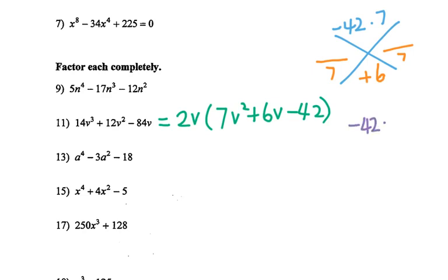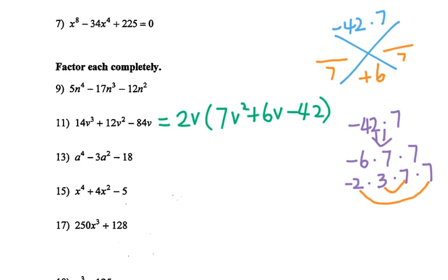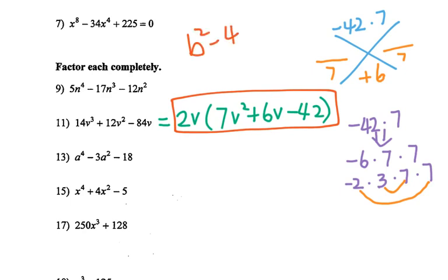So negative 42 times 7 — I can write it as negative 6 times 7, then times 7. For 6 I can write negative 2 times 3, then times 7 times 7. I can make a factor pair like 21 times negative 14, but adding them together is not positive 6. In other words, I cannot find any factor pairs for negative 42 times 7 that add together to equal positive 6, which means we cannot factor this one.